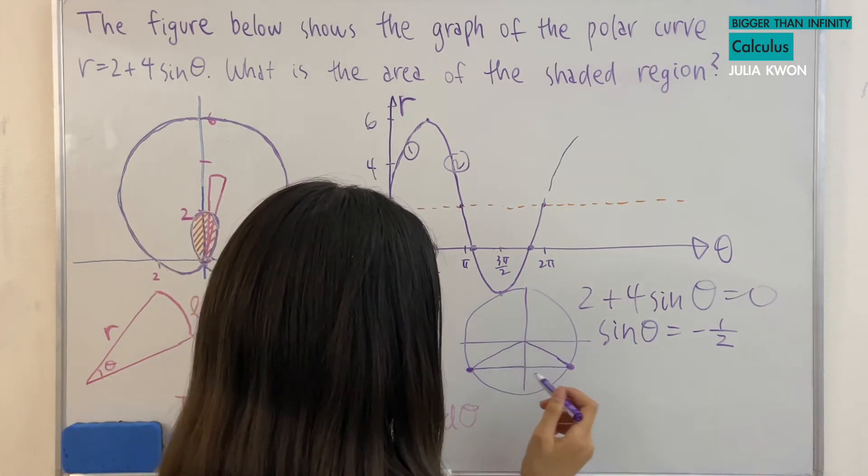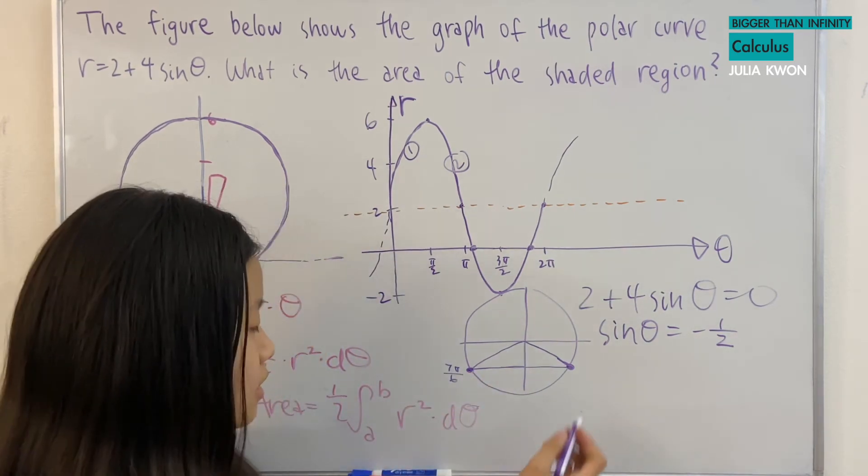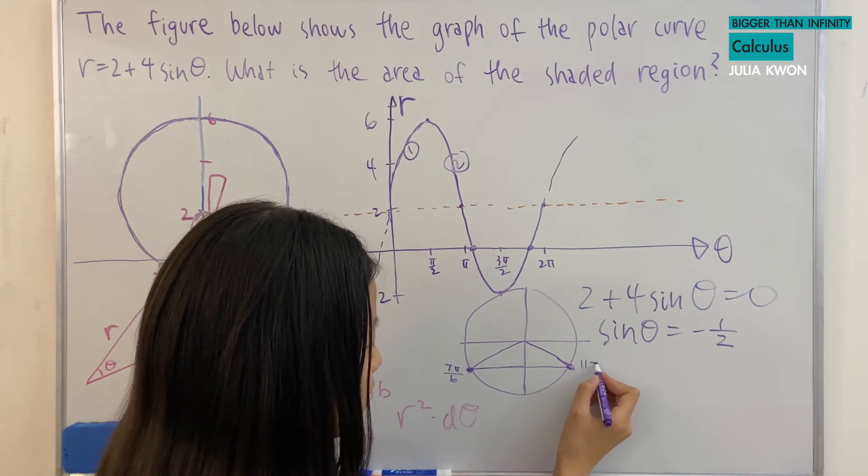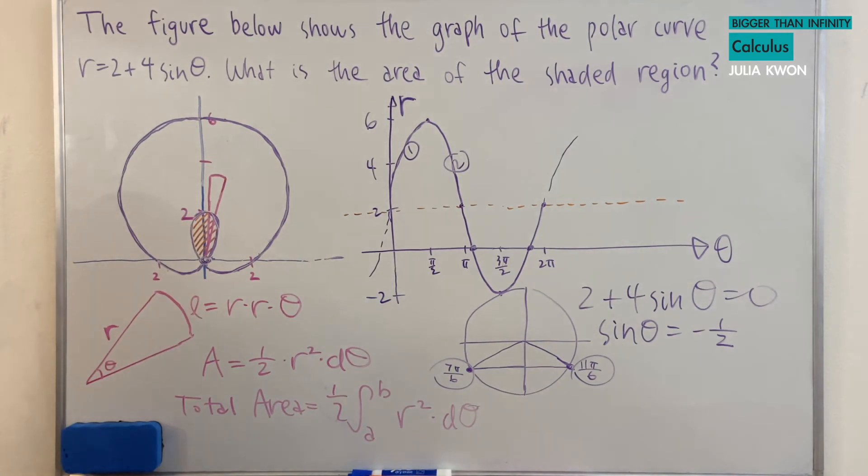And so these are basically our two theta values. And this theta value is, hold on, 1, 2, 3, 4, 7 pi over 6. And this theta value is 11 pi over 6. So these two would be our interval.